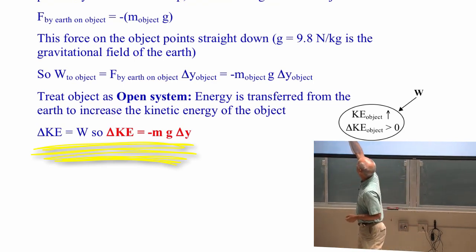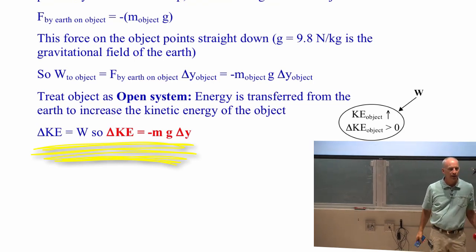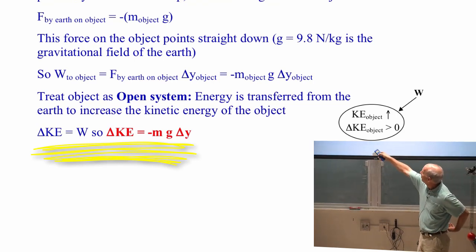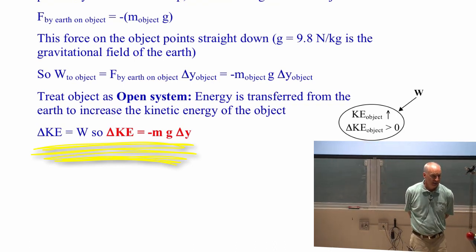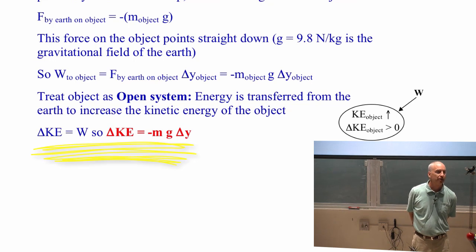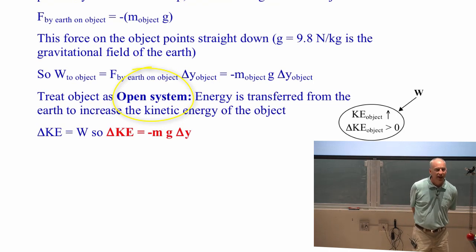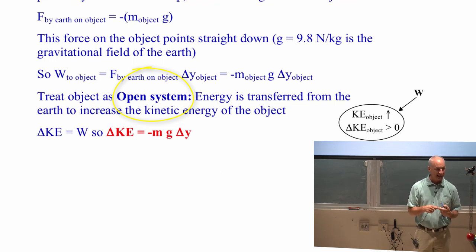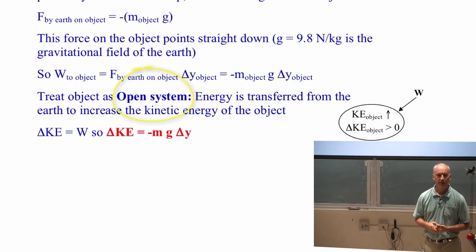There's no heat added but there's an external force pulling it downward, so there's work done. I can say the change in kinetic energy is the work done on the ball: it's negative mg times delta y. As y gets smaller, delta y is a negative number, so delta KE is a positive number. That's treating the situation with the ball dropping where the physical system is the tennis ball, so it's an open system. Energy is added because work is done because the earth is pulling down on it from the outside.